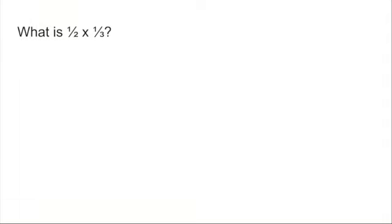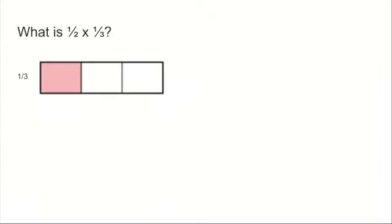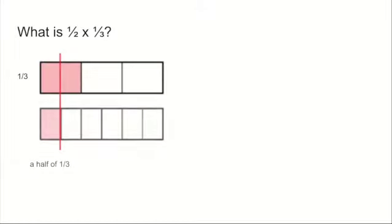Let's start using a picture. We're going to take a third — there's a bar model here — and we're going to find half of it by splitting it using a vertical line. So in the top bar I've got one third, and in the bottom bar I've split each third into two equal pieces. So these two pieces here represent the top one third above. If I take half of one third, I get one of those sixths.